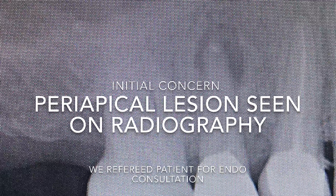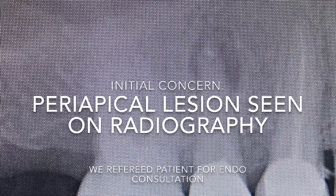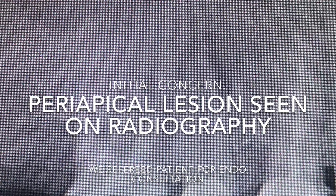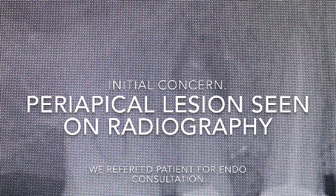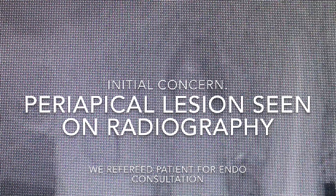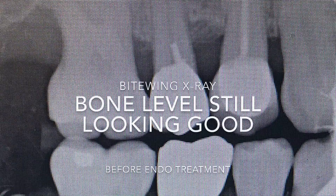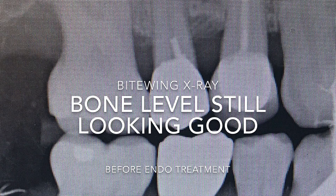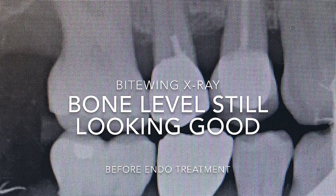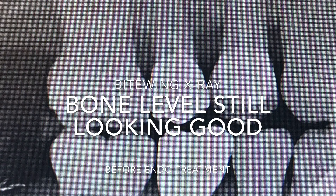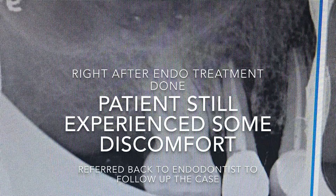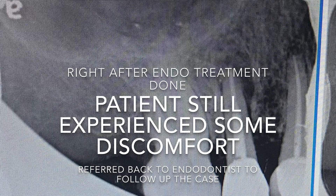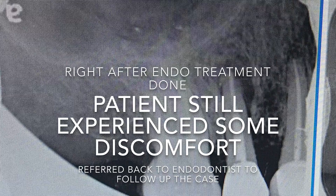This is the initial history of tooth number four with an apical lesion. There was apparently a crown already placed on there by another dentist, so I referred the patient at the initial exam to the endodontist for endo treatment. The patient went there, and you can see on the x-ray before treatment that the bone level was looking pretty good — not a lot of bone loss around the tooth number four and five area. This is the picture after the root canal was done.